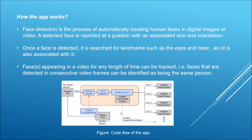Faces appearing in a video for any length of time can be tracked — faces detected in consecutive video frames can be identified as the same person. The app associates an ID with each face. When the face moves out of the frame, the ID is destroyed and won't appear again. When the face returns, a new ID is assigned for tracking.